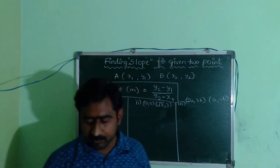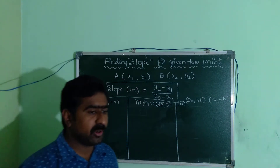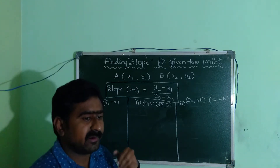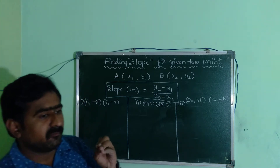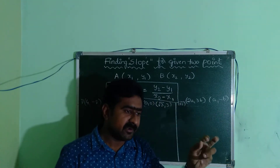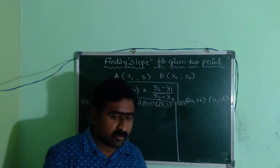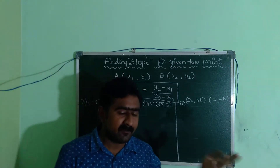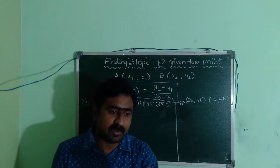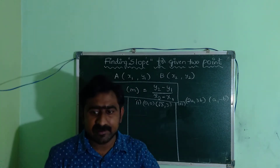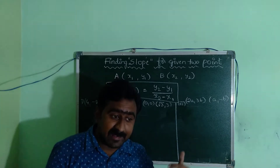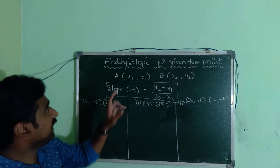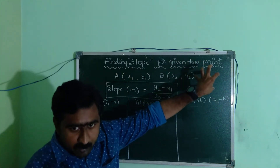Good evening everyone, welcome back to our channel and class. Today in this session we are going to discuss coordinate geometry, a concept related to 10th class mathematics, Unit Number 7. In this session we are going to discuss finding the slope for the given two points.